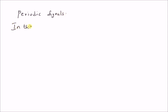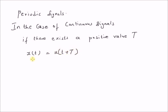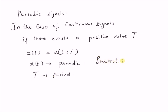In the case of continuous signals, if there exists a positive value T, such that the value of the signal x(t) is equal to x(t + T), then x(t) is a periodic signal. The value T is known as the period, and the smallest value of T is known as the fundamental period.